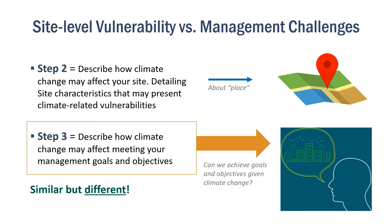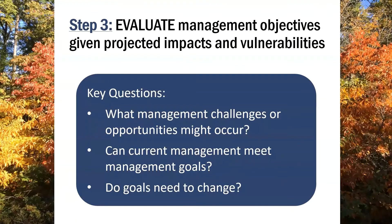Due to climate change impacts, it may be more difficult to achieve some goals or objectives than others. In step three, we connect climate change to our current management by asking: How will climate change make our objectives more or less difficult to achieve? Do our current management activities and goals seem feasible given climate change? Or do we need to alter our goals to better meet expectations of future conditions?